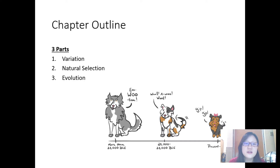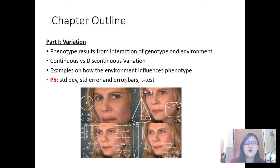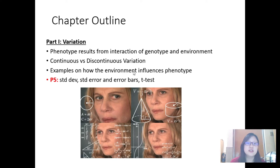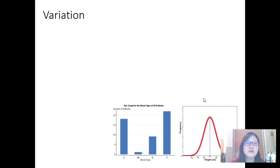In the first part called variation, we will be learning how the phenotype results from an interaction of a genotype and environment, how variation has different types, and how the environment influences the phenotype. Later on next week, we will be learning t-tests and statistics stuff. So let's look at variation now.